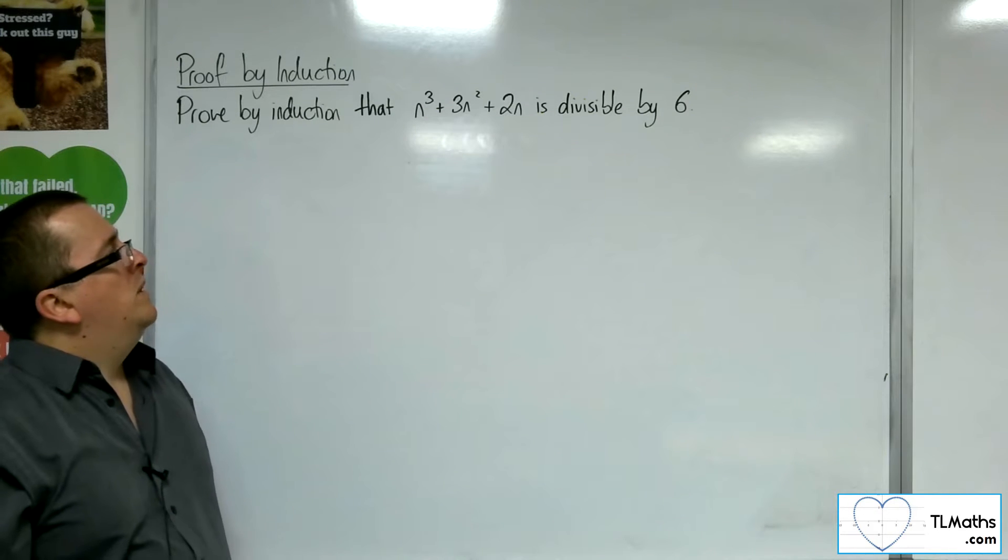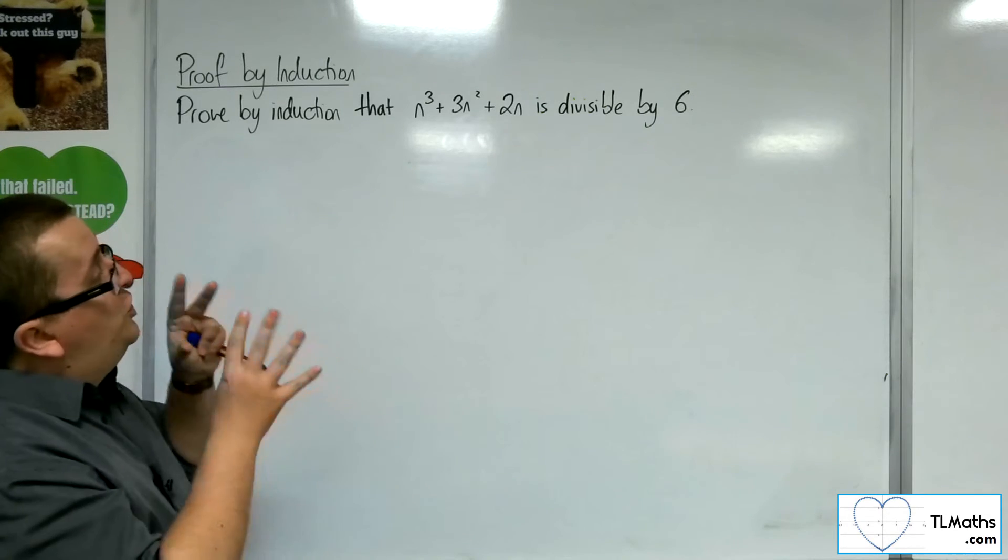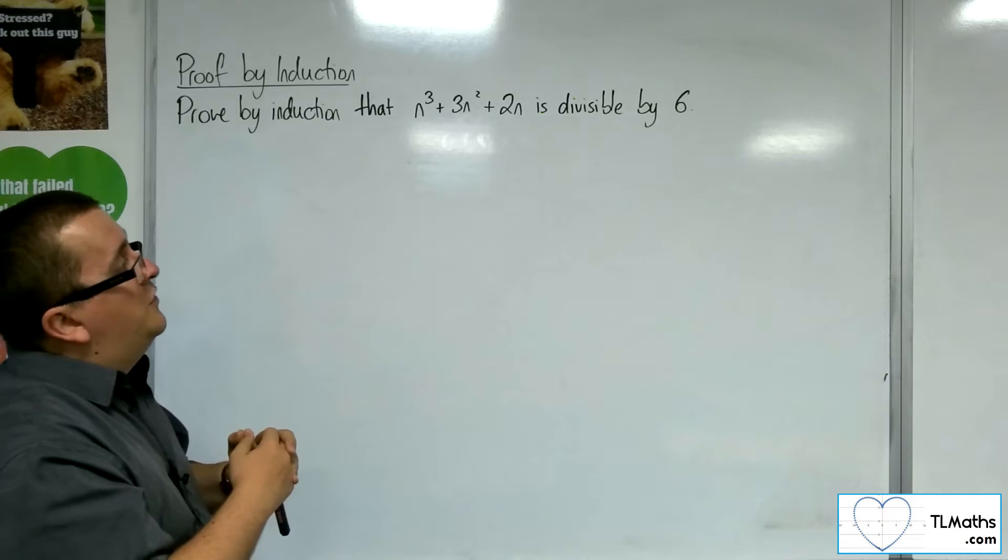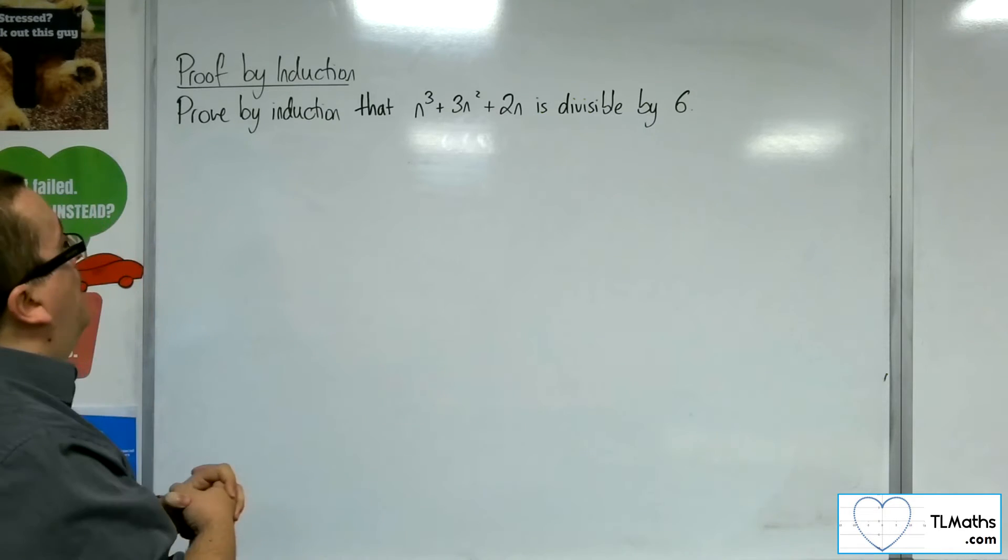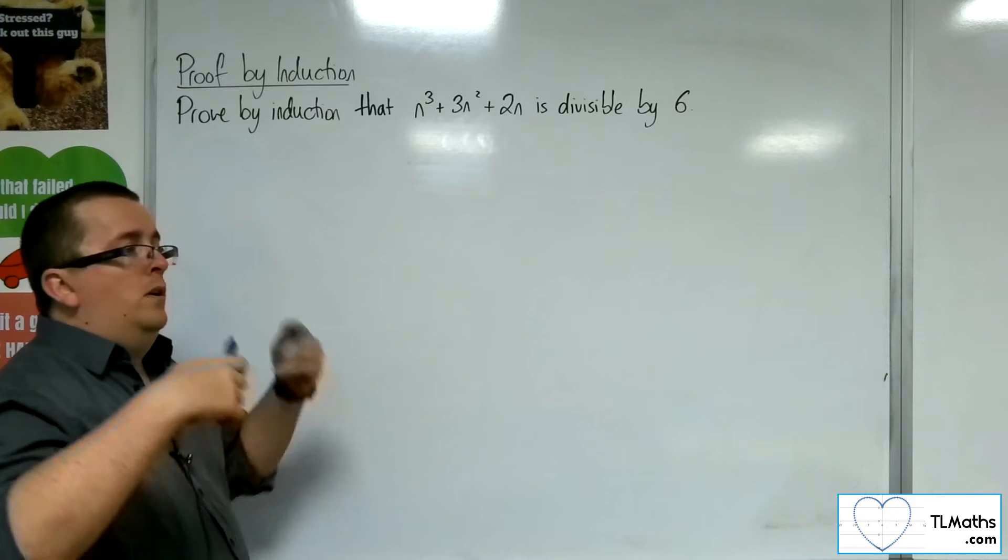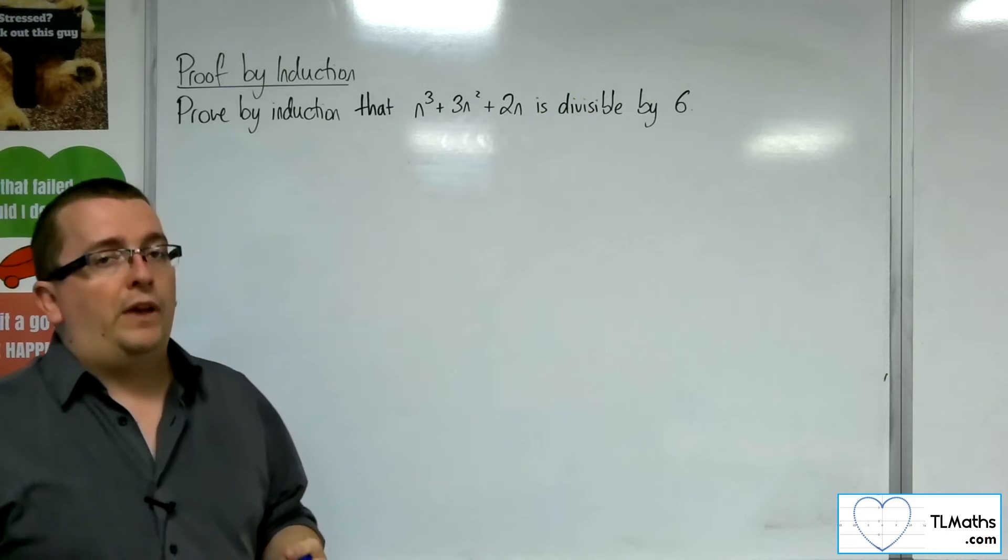So we'll have an expression and we want to show that it is always divisible by 6 for all n that are positive integers. It's still a proof by induction, so it still follows the same three-step process.